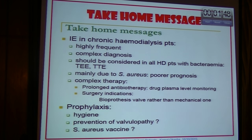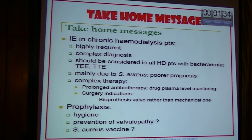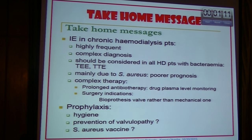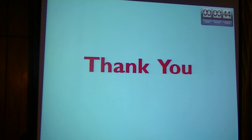In conclusion, the take-home message is that infective endocarditis in chronic hemodialysis patients is highly frequent and complex to diagnose, and should be considered in all hemodialysis patients with bacteremia. Transthoracic or transesophageal echo should be pursued. Staphylococcus aureus accounts for approximately 75% of causative organisms. The complexity of therapy is challenging, but early suspicion and following indicated criteria can lead to cure. Surgical indications apply as mentioned, and prophylaxis is very important — including prevention of vascular access infections, hygienic conditions, and vaccination.